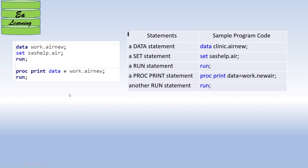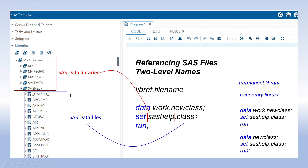Moving further, I'm going to explain SAS libraries and SAS data files. This screenshot shows how SAS libraries and SAS data sets look. The items marked in red represent SAS data libraries, which are already present in the SAS program. Each library can contain multiple SAS data files.